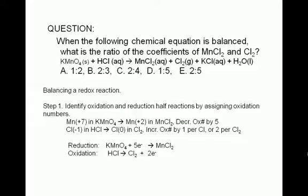By now, you should know how to do this. In this particular case, you should be able to identify that the oxidation number of manganese changes from plus 7 in potassium permanganate to plus 2 in manganese 2 chloride. From plus 7 to plus 2 involves a decrease of 5. This means that manganese is reduced, and every time a manganese 2 chloride is formed, 5 electrons are gained by the manganese atom.